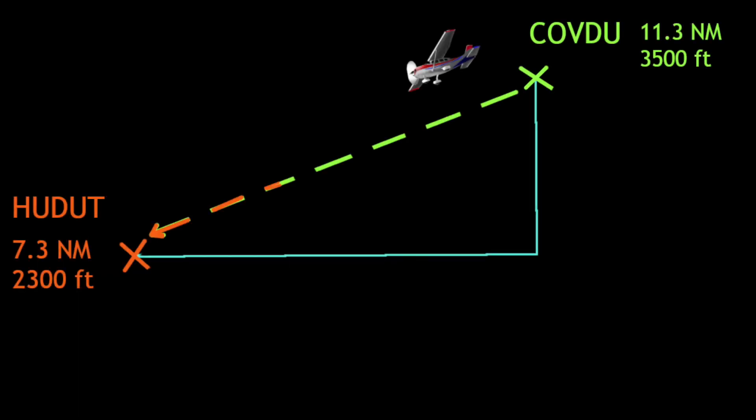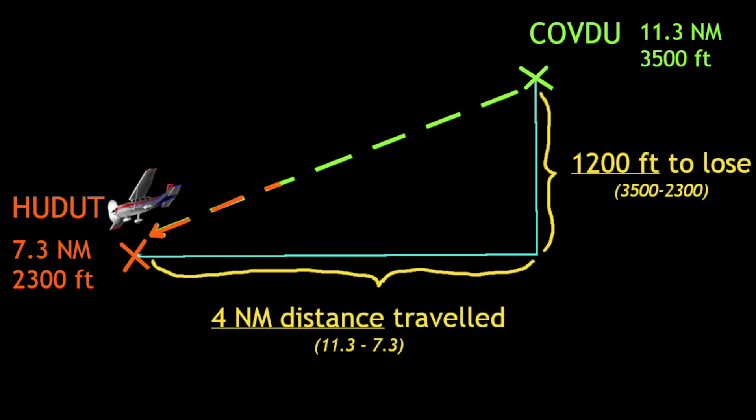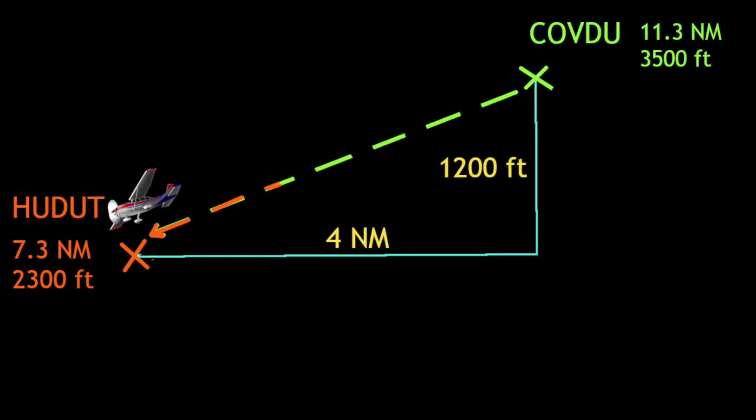Starting up at Kavdu, we are 11.3 nautical miles from the station and up at 3500 feet. We will need to descend down towards Hadat, and we need to make sure that by the time we reach Hadat we will be 7.3 nautical miles from the station and at 2300 feet in altitude. By finding the difference between the altitude and distance between these two positions, we find that in this transition we need to lose a total of 1200 feet of altitude and will have traveled 4 nautical miles between Kavdu and Hadat.